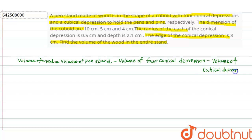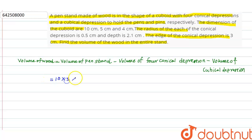Now we know the volume of a cuboid is L × B × H. Since the pen stand is in the form of a cuboid, volume of pen stand equals 10 × 5 × 4. Now for the volume of 4 conical depressions: